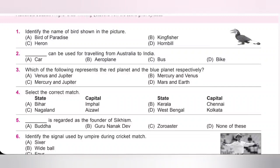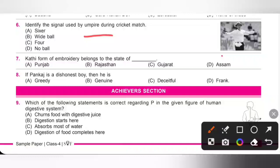Sixth one: identify the signal used by the umpire during the cricket match. So please check the given signal. The signal used by the umpire during the cricket match is void ball. Option B is the correct answer.